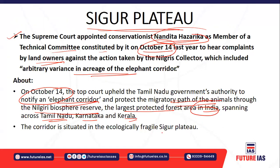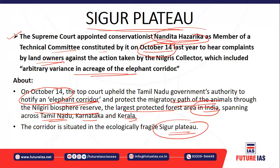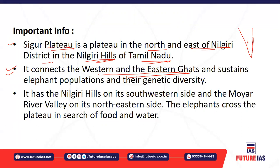The corridor which passes through the Nilgiri Biosphere Reserve goes through an ecologically fragile area called the Sigur Plateau. The conservationist appointed by the Supreme Court as a member of the technical committee hears complaints by landowners regarding decisions made by the district collector on the elephant corridor. The Sigur Plateau is located in the north and east of Nilgiri District in the Nilgiri Hills of Tamil Nadu, and connects the Western and Eastern Ghats, sustaining elephant population and their genetic diversity.